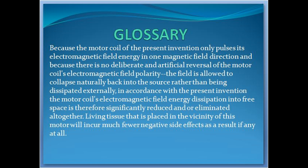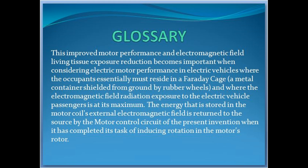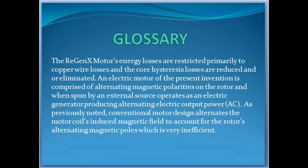In accordance with the present invention, the motor coil's electromagnetic field energy dissipation into free space is therefore significantly reduced and/or eliminated altogether. Living tissue placed in the vicinity of this motor will incur much fewer negative side effects as a result, if any at all. This improved motor performance and electromagnetic field living tissue exposure reduction becomes important when considering electric motor performance in electric vehicles, where the occupants essentially must reside in a Faraday cage — a metal container shielded from ground by rubber wheels — and where the electromagnetic field radiation exposure to the electric vehicle passengers is at its maximum. The energy stored in the motor coil's external electromagnetic field is returned to the source by the motor control circuit of the present invention when it has completed its task of inducing rotation in the motor's rotor. The Regenx motor's energy losses are restricted primarily to copper wire losses, and the core hysteresis losses are reduced and/or eliminated. An electric motor of the present invention, comprised of alternating magnetic polarities on the rotor, when spun by an external source operates as an electric generator producing alternating electric output power (AC).